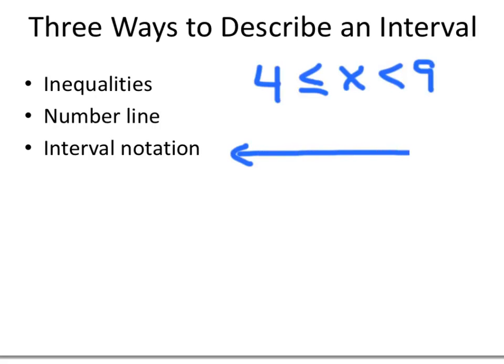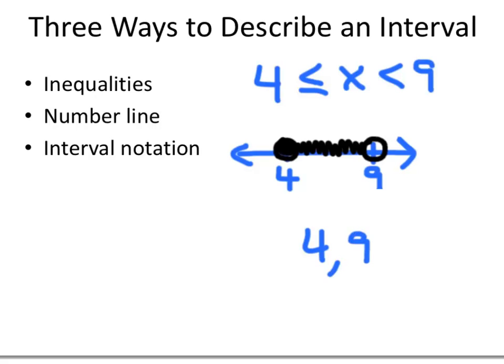On the number line, we mark 4 and 9. Since we're not including 9, we draw an open circle there. Since we are including 4, we draw a filled-in circle at 4, and then shade everything in between. For the interval notation, we write 4 and 9 with a comma between them. We don't want to include 9, so we use a round parenthesis. To indicate we do want to include 4, we draw a square bracket around it: [4, 9).